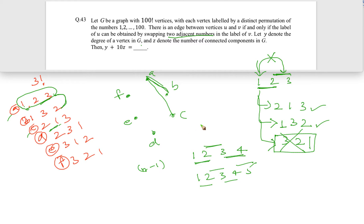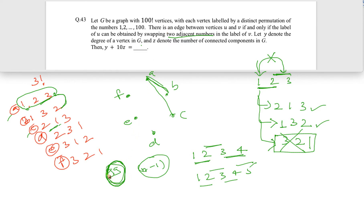So there are n minus 1 possible different vertices to which any vertex can be connected, which means n minus 1 is the degree of every vertex. Every node in this graph has degree n minus 1. For n = 100, that degree is 99. So y, the degree of a vertex, equals 99.